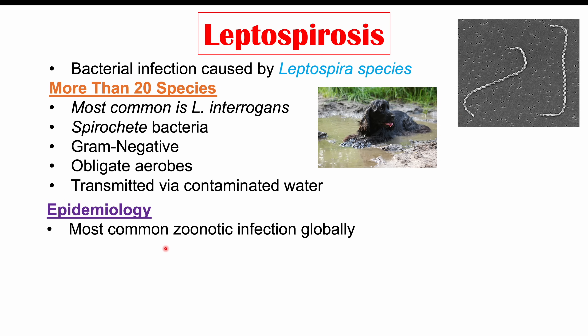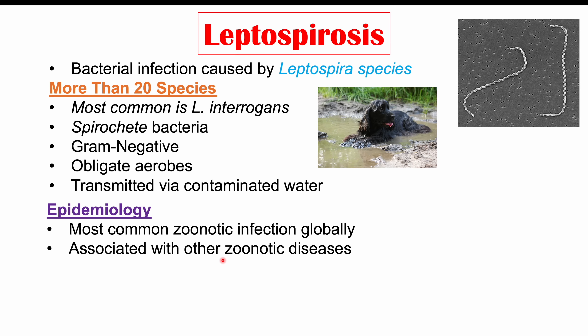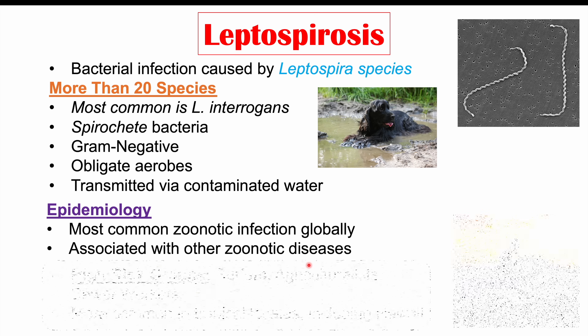Leptospirosis is the most common zoonotic infection globally. Zoonotic means it comes from animals. It is estimated that there are 1 million cases of leptospirosis annually, and 60,000 deaths are attributed to leptospirosis each year. Leptospirosis is also associated with other zoonotic diseases like dengue fever and malaria.